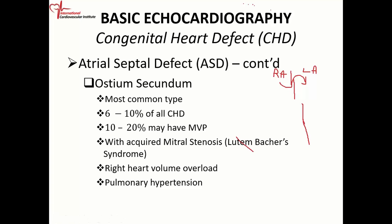The ostium secundum is in the vicinity of the fossa ovalis, close to where you have the foramen ovale. It accounts for about 6 to 10% of all congenital heart defects, and it is associated with mitral valve prolapse in about 10 to 20% of cases. There is a condition called Lutembacher syndrome — those patients, in addition to an ostium secundum atrial septal defect, also have mitral stenosis. Because of the ASD and mitral stenosis, blood cannot get out of the left atrium, pressure builds up, and you tend to get more left-to-right shunting.